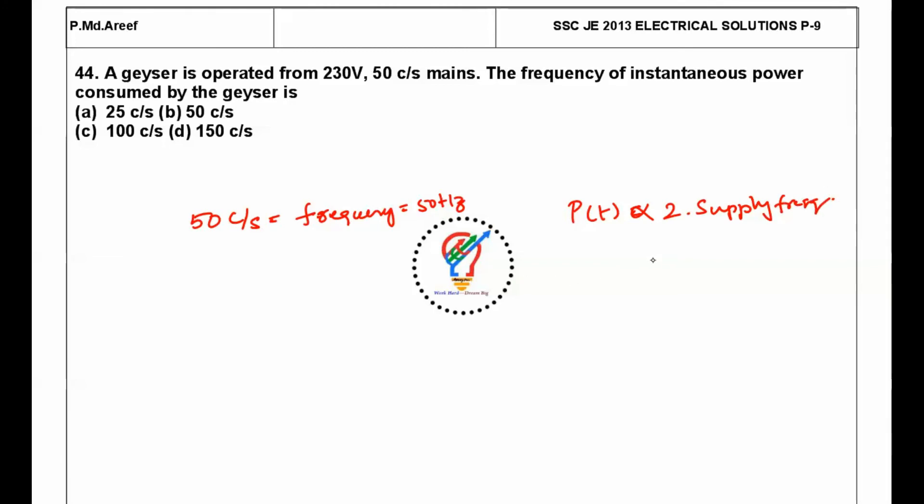So 2 × 50 cycles per second is 100 cycles per second. The answer is C.